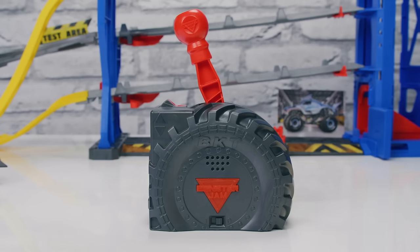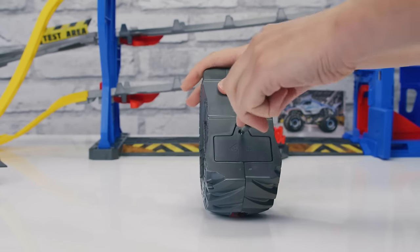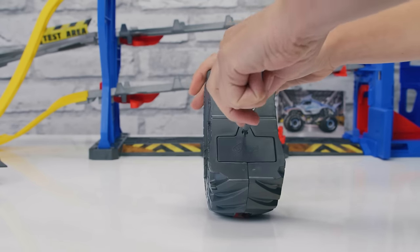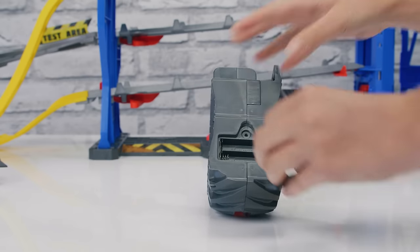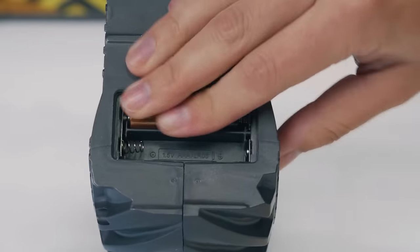Now add two AA batteries to the crank. Use a screwdriver to remove the battery door. Add the batteries and replace the door.